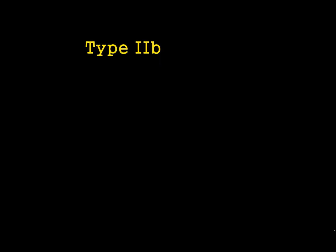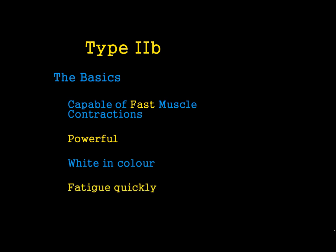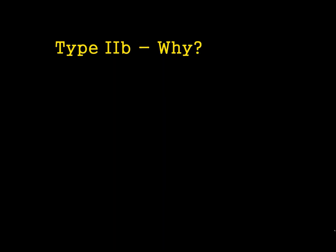Now let's look at the complete opposite end of the spectrum — Type 2B. These are very different, because these ones are capable of very fast muscle contractions. They're very powerful, and they're white in colour, which makes them very easy to distinguish from Type 1. Because they're so fast and powerful, they fatigue very quickly. These are commonly used in quick, explosive movements — in sport, weightlifting would be a great example. The question we need to ask is why these muscle fibres are so quick and powerful but fatigue quickly.